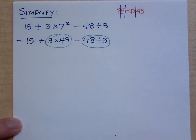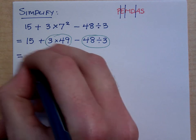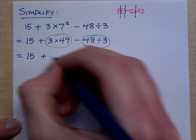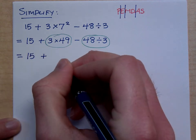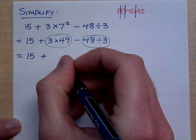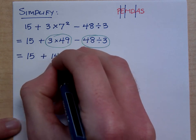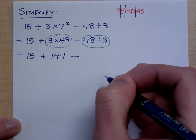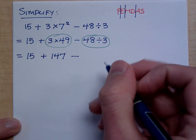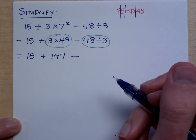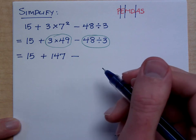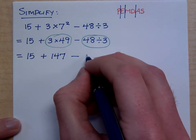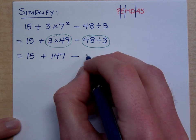So when I go through this, I still have my 15 plus — what's 3 times 49? It's 147 minus, and then you've got 48 divided by 3. Those guys are stuck together, so you perform that operation. 48 divided by 3 is 16.